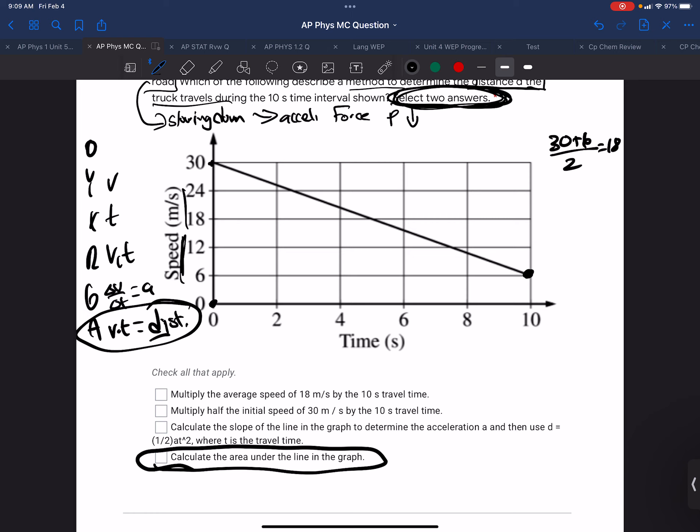Take the average speed of 18 and multiply it by the travel time of 10. Well, notice that's another way of finding the area. So it looks like choice A is our other option.